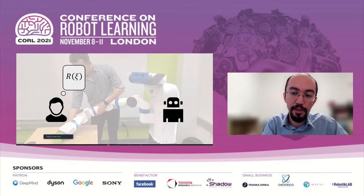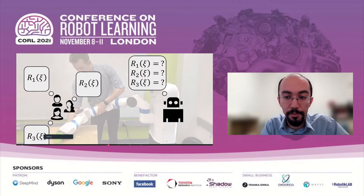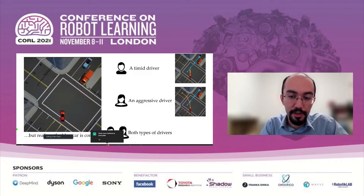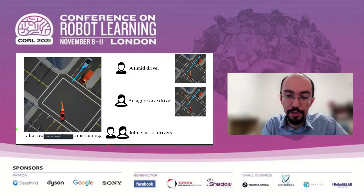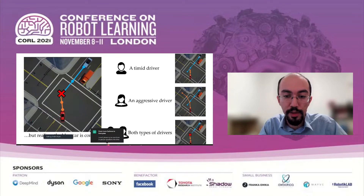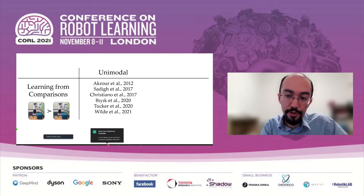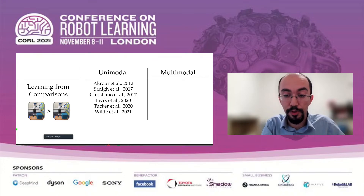But what if the data come from multiple users who have different reward functions and our robot doesn't know any of them? It doesn't even know who provided the data. In the driving example, this would be a scenario where the autonomous car was trained using aggregate data from both drivers. In such settings, we cannot really use standard learning from comparison techniques, because the car would have an accident while trying to find a policy that's close enough to both drivers. This means we need to be able to handle multimodal rewards to learn successful policies. Although there have been many works for unimodal reward functions, learning multimodal rewards from comparisons was not studied.